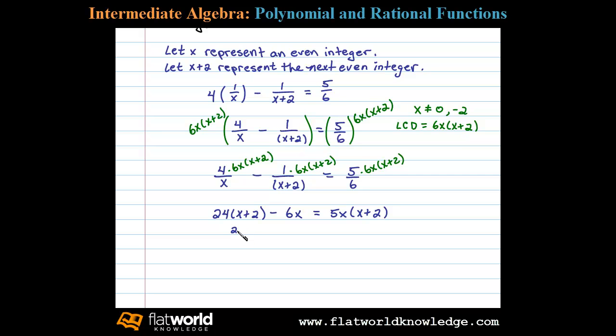Then equals 5x² + 10x. Combine like terms: 24x minus 6x is 18x, so 18x + 48 equals 5x² + 10x.